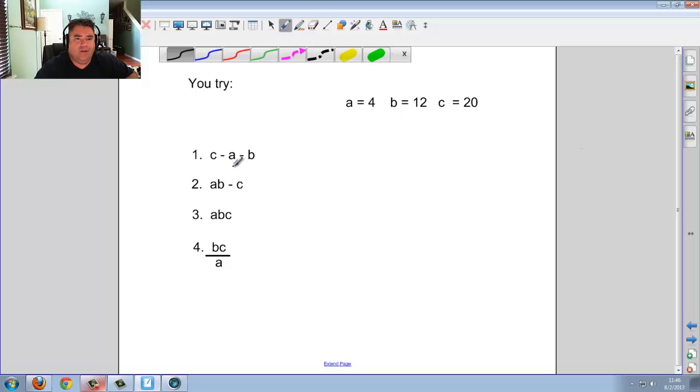Second, we have a, b minus c. Now in this case, a, b is touching. And touching means times. So 4 times 12. Then after that's done, minus the c, which is 20. Why do these go first? Not only are they left to right, but this represents the times. And times will go before they are subtracted. So 4 times 12 is 48. And 48 minus 20 should be 28.